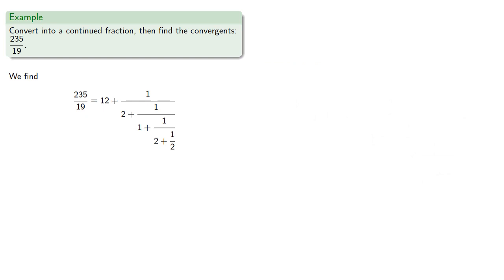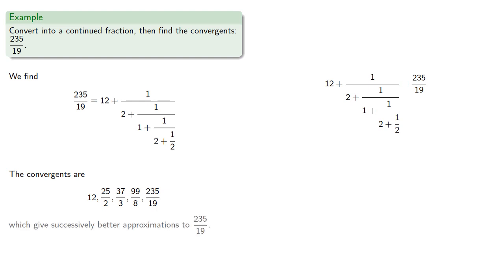Our convergents: our first one is going to be the whole number part. Our next one will include the first fraction. We'll include one more term for our next convergent. One more for the next convergent. And because this is a finite continued fraction, our last convergent is just 235 over 19. The important thing here is that these give successively better approximations to 235 over 19, even though the denominators are smaller.